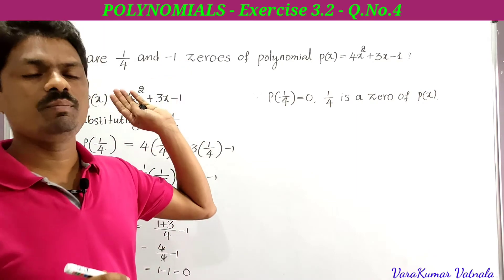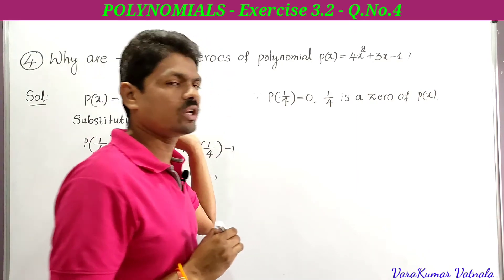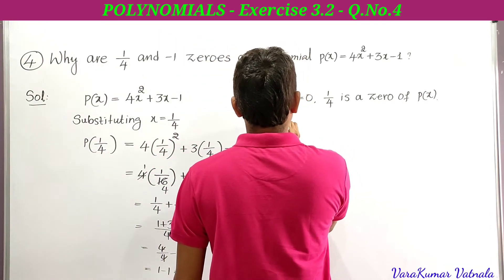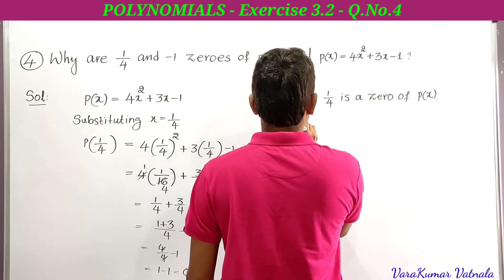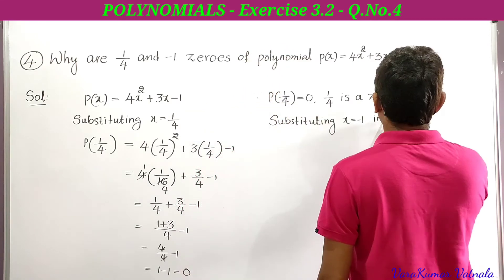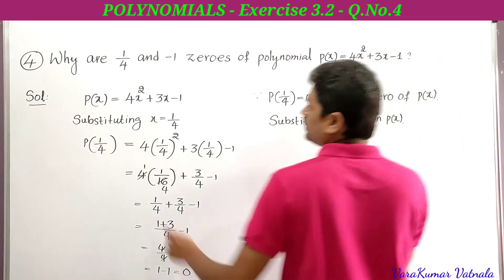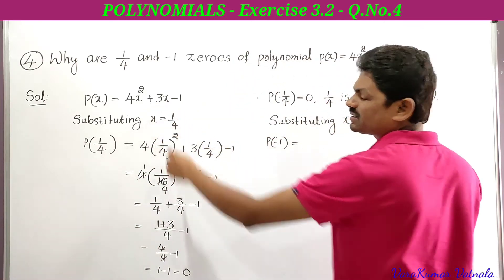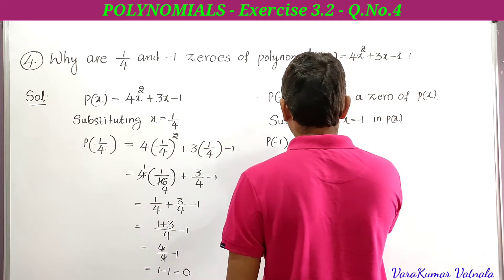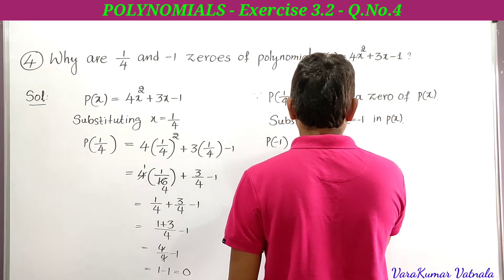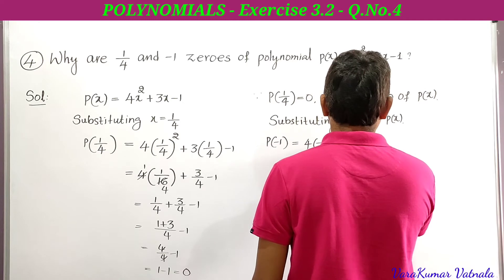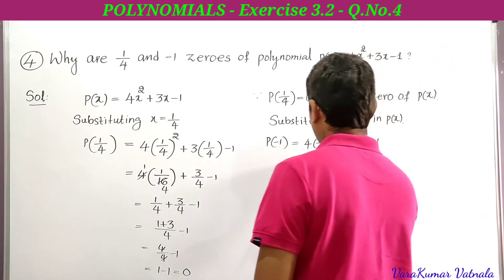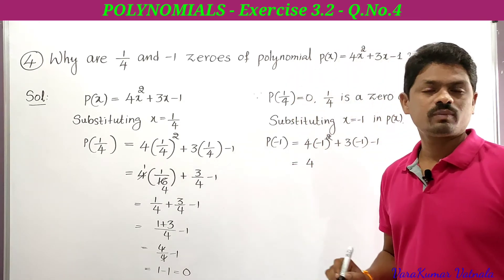Now we substitute x = -1 in p(x). p(x) = 4x² + 3x - 1. Substituting x = -1: p(-1) = 4 × (-1)² + 3 × (-1) - 1.